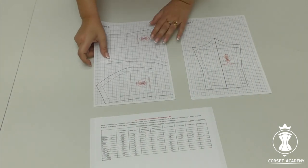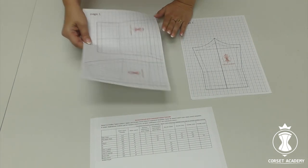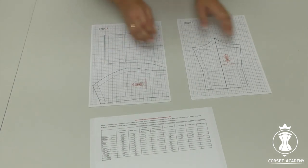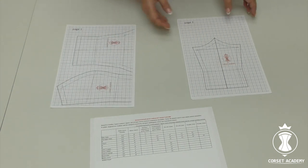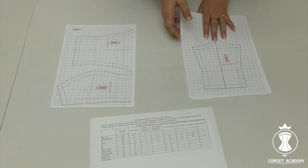You can see here the stack with the patterns for the face of the corset is on the left and the patterns for the lining is on the right. Note the differences between the face patterns and lining patterns.